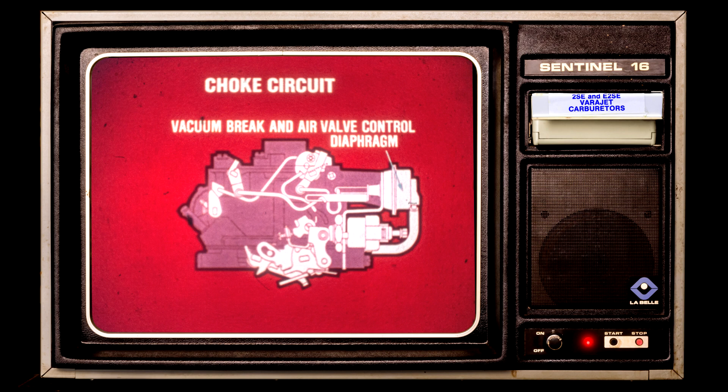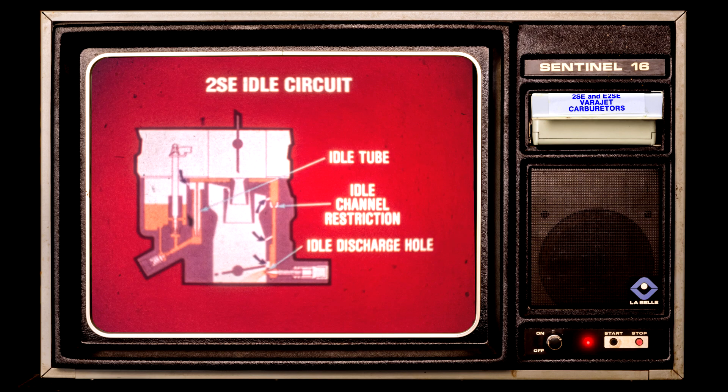The choke circuits are almost identical on both carburetors. A single vacuum brake and air valve control diaphragm is mounted on the idle speed solenoid bracket. The one difference in the choke circuits is that the 2SE choke coil is adjustable, but the E2SE's choke housing cover is tamper proof.